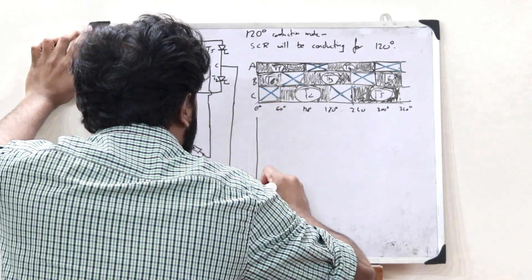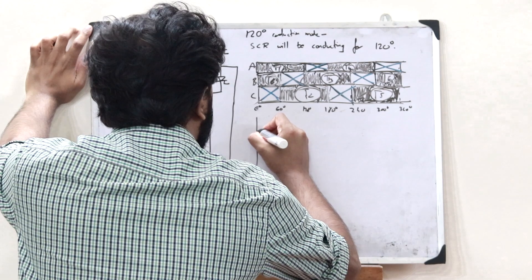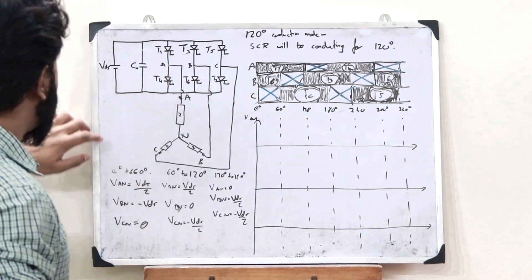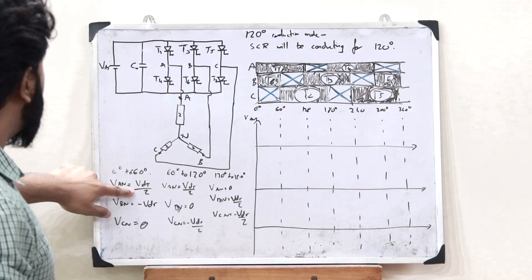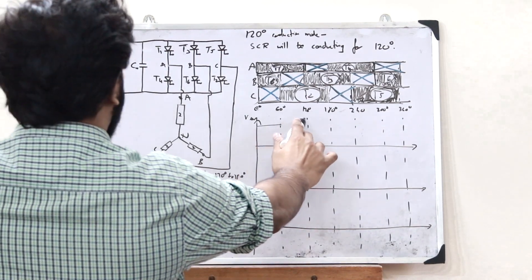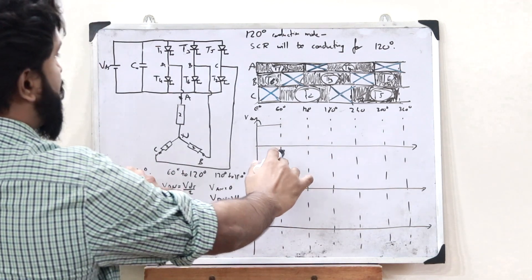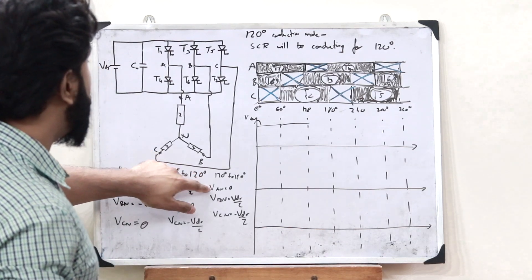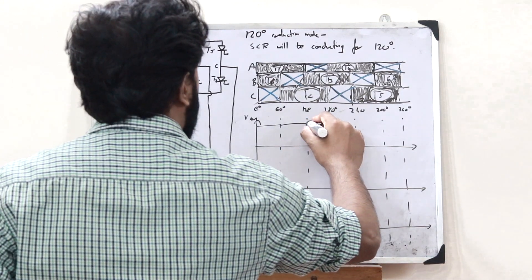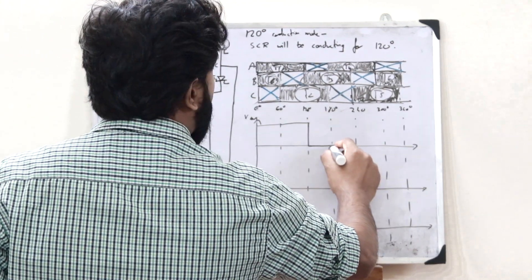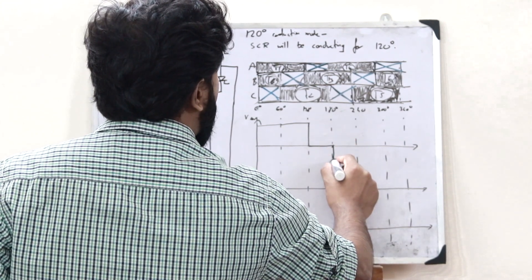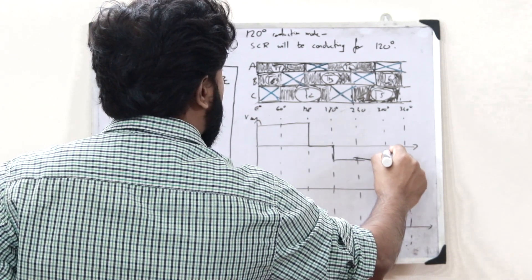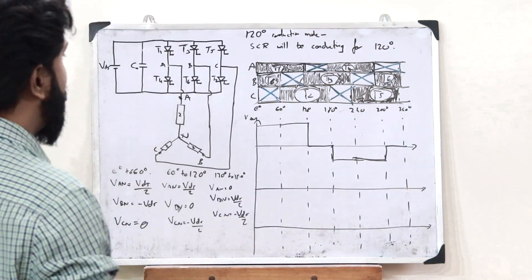Drawing the phase waveforms: for VAN, from 0 to 60 degrees it is VDS/2, and from 60 to 120 degrees it is also VDS/2. From 120 to 180 degrees, VAN equals 0. For 180 to 240 degrees it is −VDS/2, and from 240 to 300 degrees it is −VDS/2. For 300 to 360 degrees it is 0. This is the waveform for VAN.